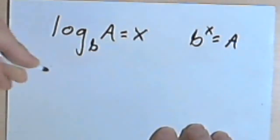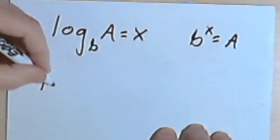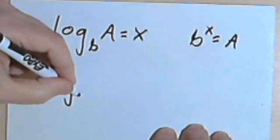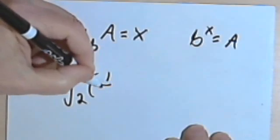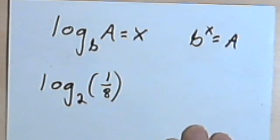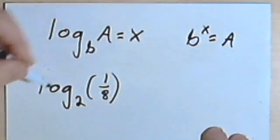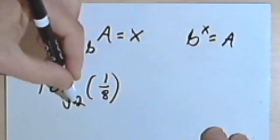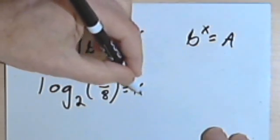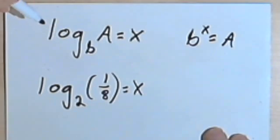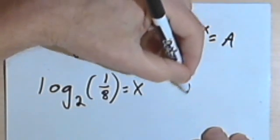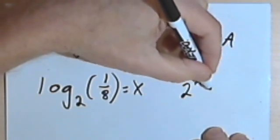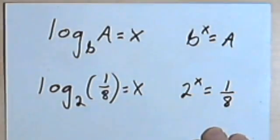Let's try something a little more difficult. What if I have the log base 2 of a fraction 1/8. I'm going to write that as the log base 2 of 1/8 equals x. And now I want to convert that to exponential form. So I'm going to write 2 to the x equals 1/8.